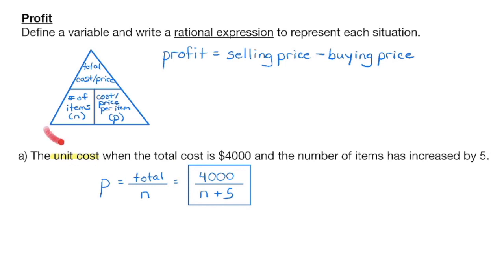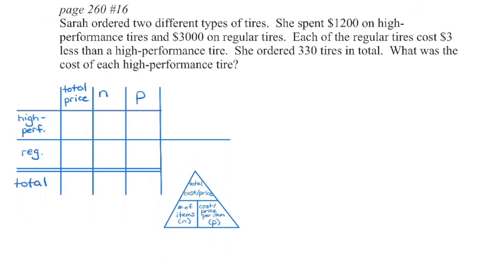Similar to speed-distance-time, we can use a triangle to show these relationships. If my total cost is $4,000, I divide by the number of items to get the cost per item. If we increase the number of items by five, the unit cost becomes $4,000 divided by n plus 5. I begin by setting up a chart to organize the information. In this particular question, we're comparing high performance tires to regular tires.